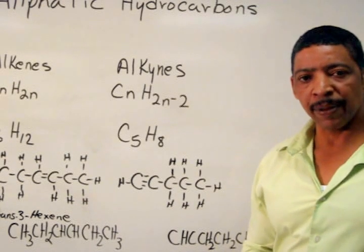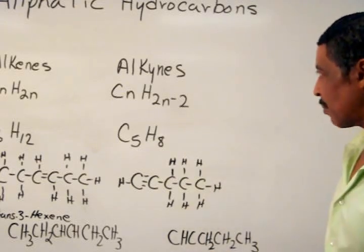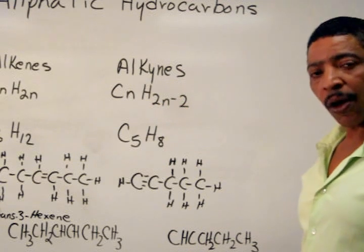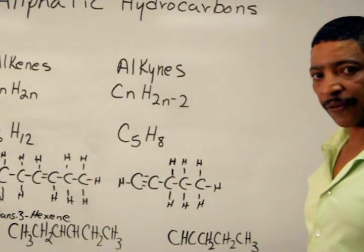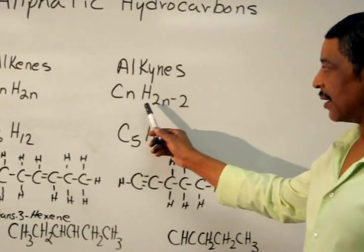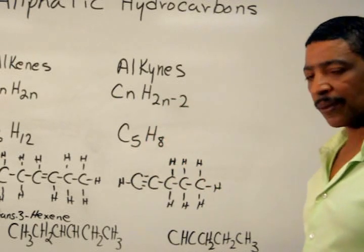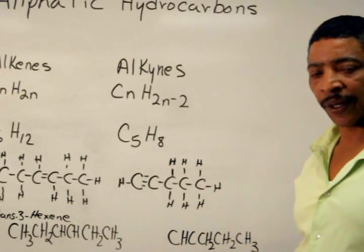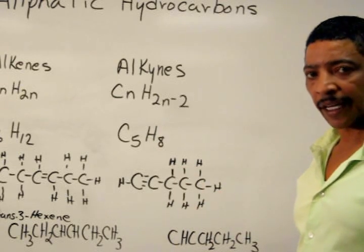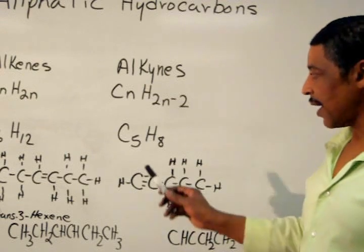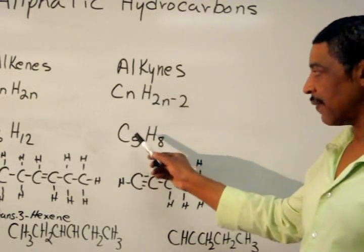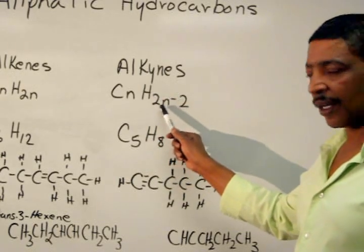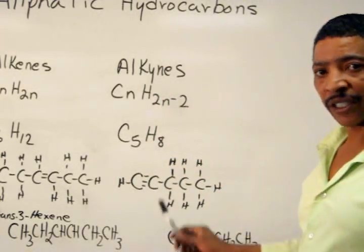Hydrocarbon compounds containing triple bonds belong to a class of compounds known as the alkynes. All alkyne compounds will fit the following general formula: CnH2n-2. This is an example of the chemical formula for an alkyne known as pentyne. In this case, n is equal to 5. Therefore, H must equal 2 times 5, which is 10, minus 2, which is 8.